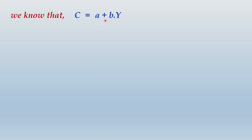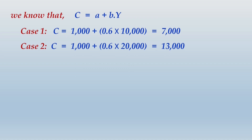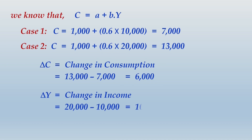In Case 1: C = 1000 + 0.6 × 10,000 = 1000 + 6000 = 7000. In Case 2: C = 1000 + 0.6 × 20,000 = 13,000. The change in consumption ΔC = 13,000 − 7,000 = 6,000. The change in income ΔY = 20,000 − 10,000 = 10,000.